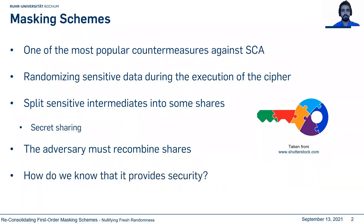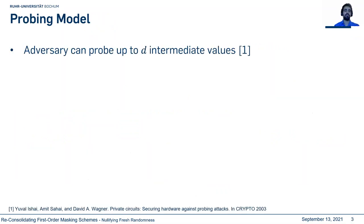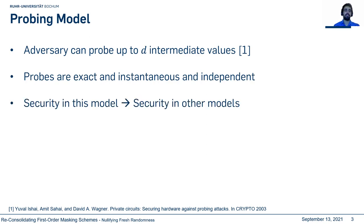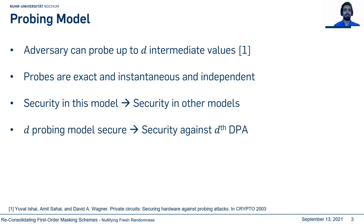But how can we evaluate a given mask design? To this end, the probing model was proposed. The adversary can probe intermediate values, and each probe is exact and independent. It has been shown that security in this model also provides security in other models. If any combination of intermediate values does not reveal anything about the circuit, then the design is secure against this order side-channel attack.